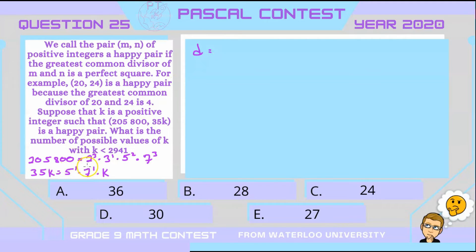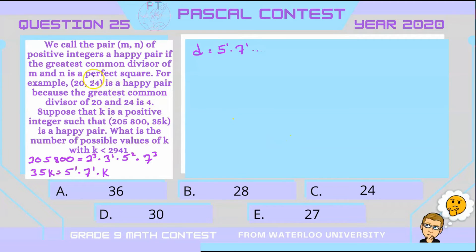So for our problem, looking at what's common in both factorizations, we can see there's a 5 and a 7 in both, so d will have at least one 5 and one 7. But that's not all, because we still don't know what k is — so let's use another strategy. This has to do with the fact that d is going to have to be a perfect square.